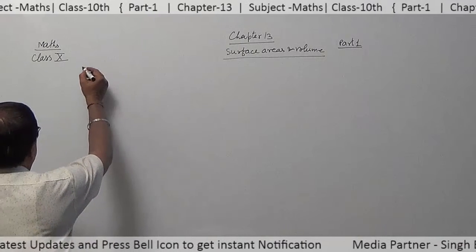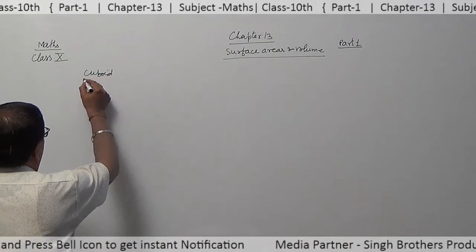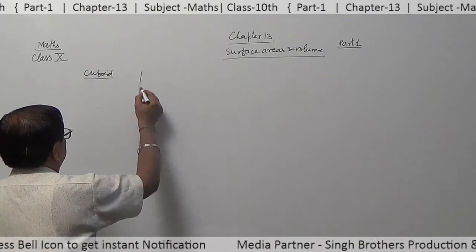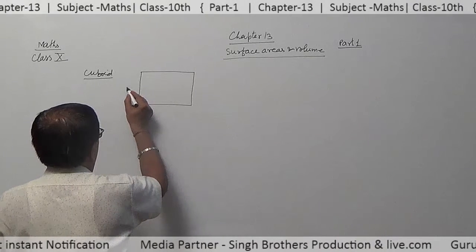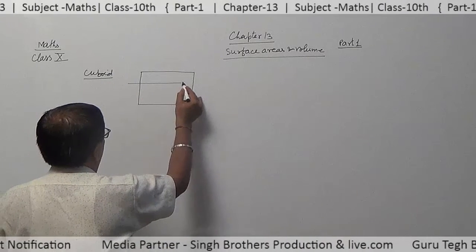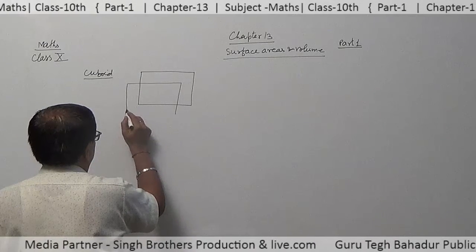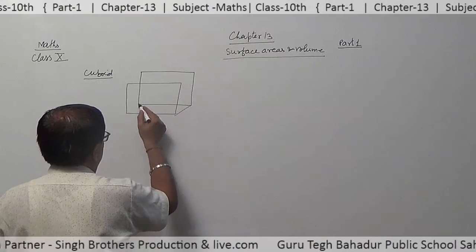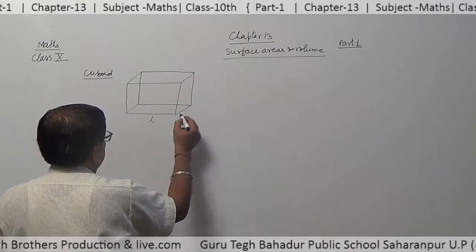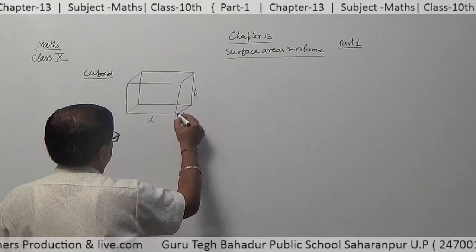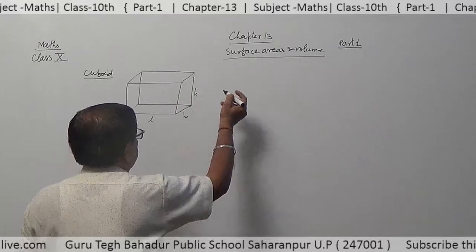First of all, cuboid. This is the shape of cuboid. This is length, this is breadth, and this is height.